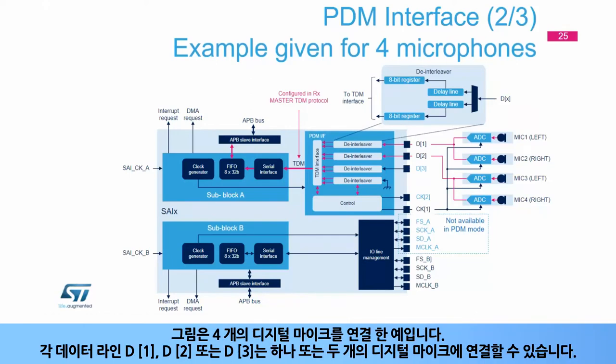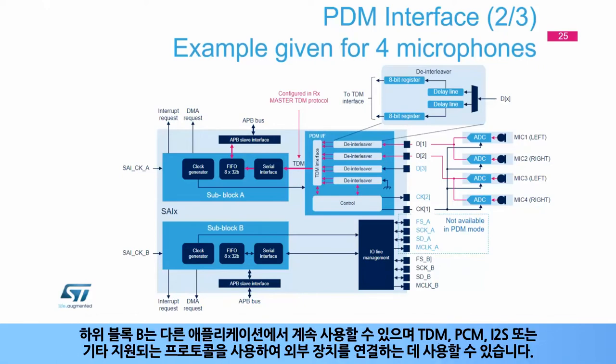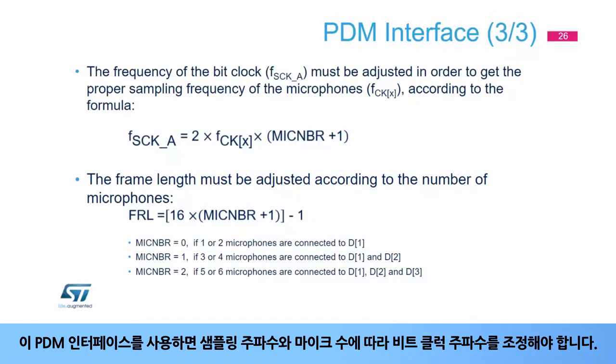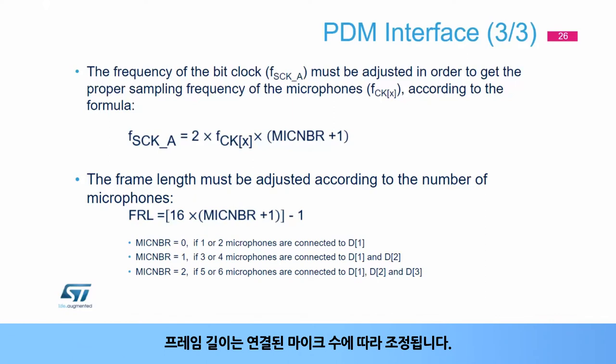The figure shows an example of connection of four digital microphones. Note that each data line, D1, D2, or D3, can be connected to one or two digital microphones. Subblock B is still available for other applications, and can be used to connect an external device using TDM, PCM, I2S, or any other supported protocol. With this PDM interface, the bit clock frequency has to be adjusted according to the sampling frequency and the number of microphones. The frame length is also adjusted according to the number of connected microphones.